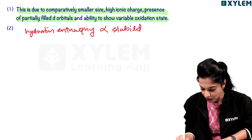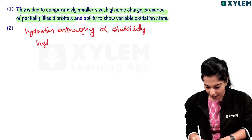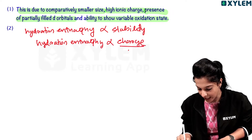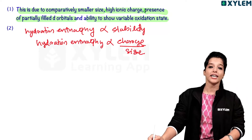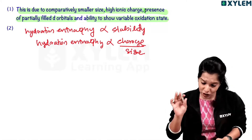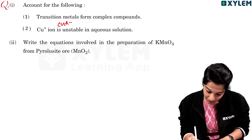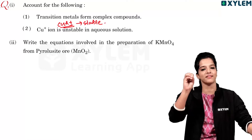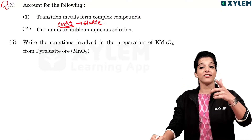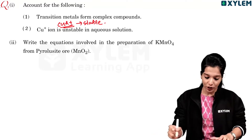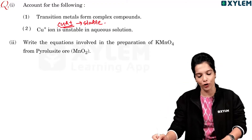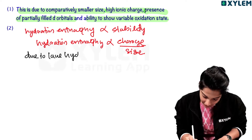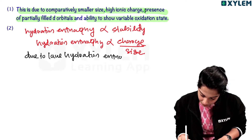Hydration enthalpy is directly proportional to charge divided by size. Cu+ is unstable while Cu2+ is stable. Due to low hydration enthalpy of Cu+, it is unstable in aqueous solution.